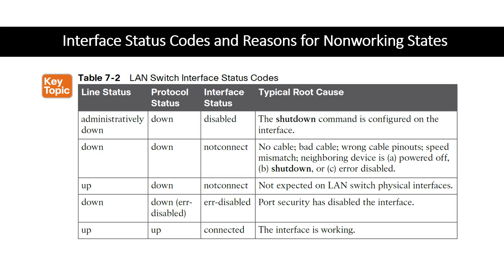If you do a show interfaces status and see line status as 'administratively down' and protocol down, with interface status shown as 'disabled,' that tells you the shutdown command is configured on that interface. You would do a show run to verify it is shut down — maybe it's down for a reason, but that's the root cause.